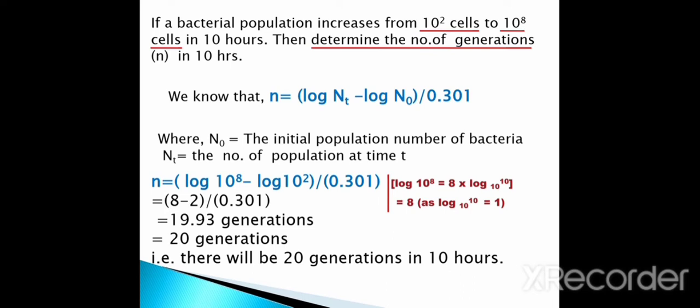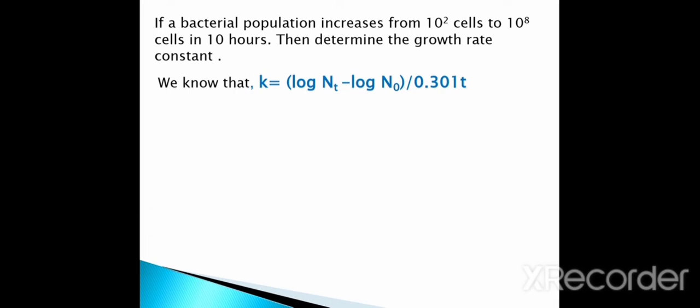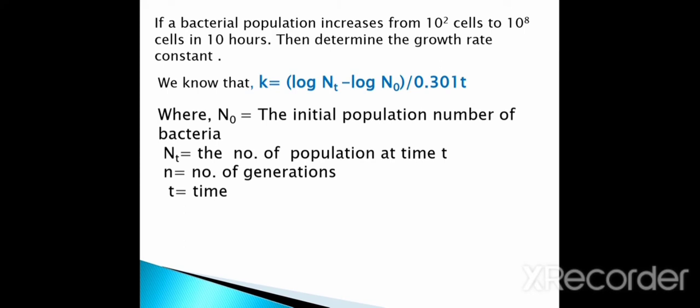If you remember the formula and know the initial and final population of a bacterial population, you can easily calculate the number of generations. The next question: if a bacterial population increases from 10^2 cells to 10^8 cells in 10 hours, determine the growth rate constant. The growth rate constant k = (log Nt − log N0) / (0.301 × t), where N0 is the initial population, Nt is the population at time t, and t is the time.